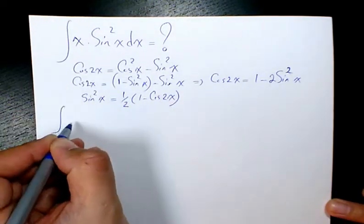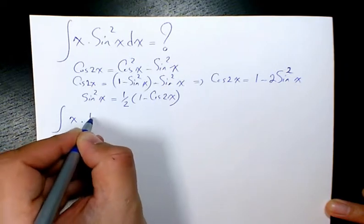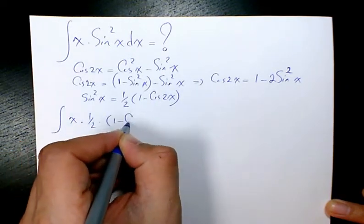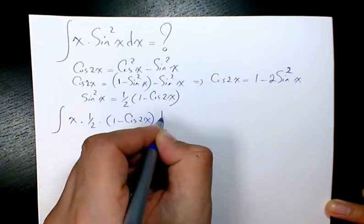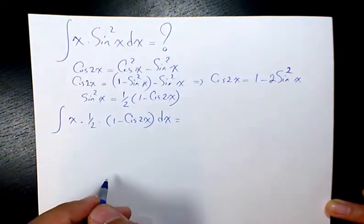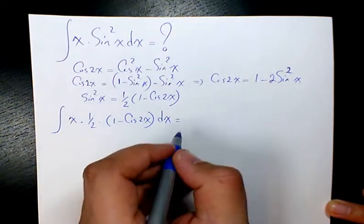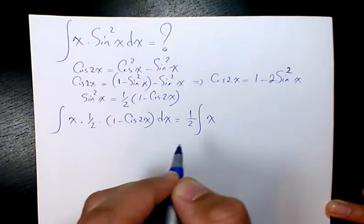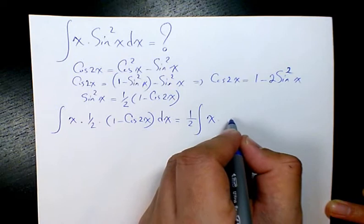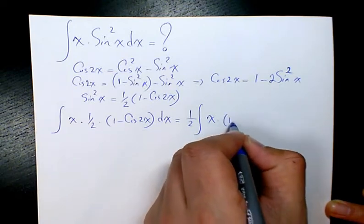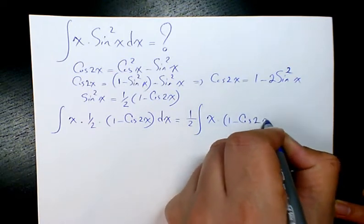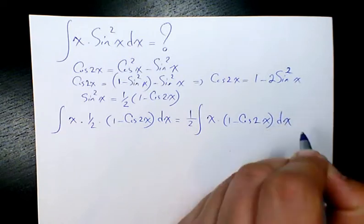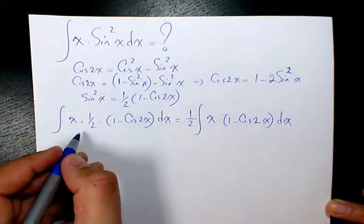Then I substitute. We will have x times 1 over 2 times 1 minus cosine 2x dx. Then I take 1 over 2 out, it will be x times 1 minus cosine 2x dx, and then I separate it.